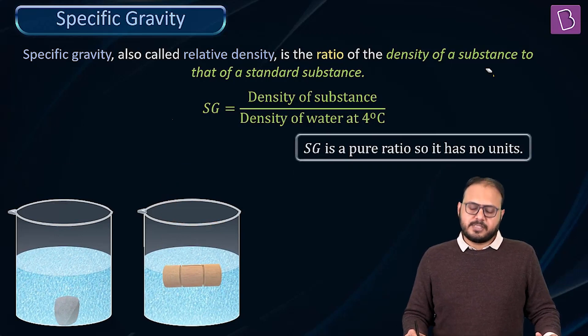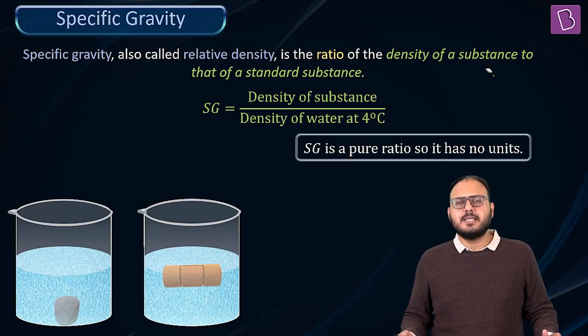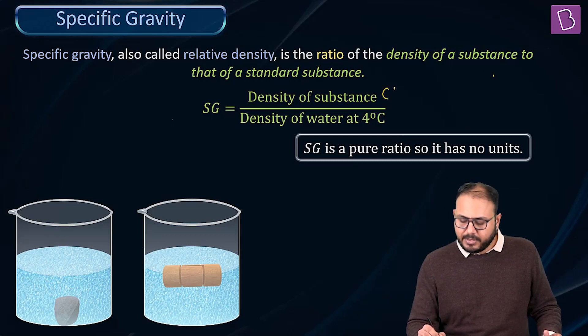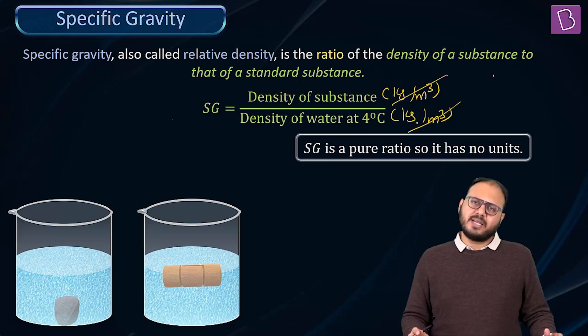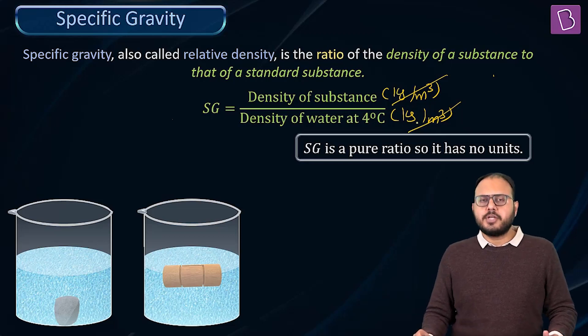Clearly, if the specific gravity is a pure ratio, obviously, this will be in kilogram per meter cube. This will be in kilogram per meter cube. Clearly, the kilogram per meter cube and kilogram per meter cube will get cancelled. What I will get is just a ratio.